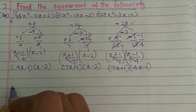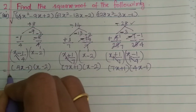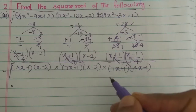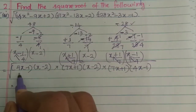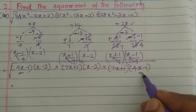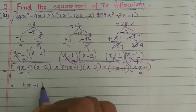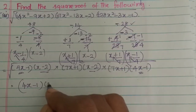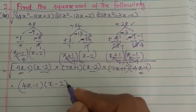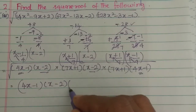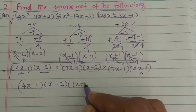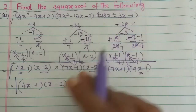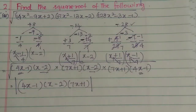Now we have the factors. Under the square root we identify common factors: 4x minus 1 appears twice, x minus 2 appears twice, and 7x plus 1 appears twice. So each pair gives a modulus value. The result will be modulus of each factor.